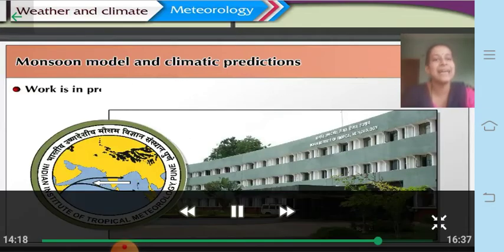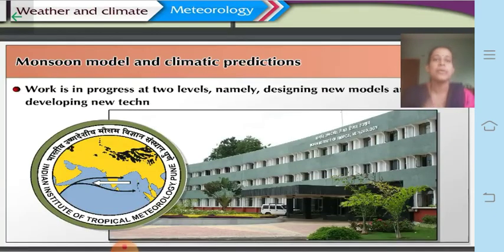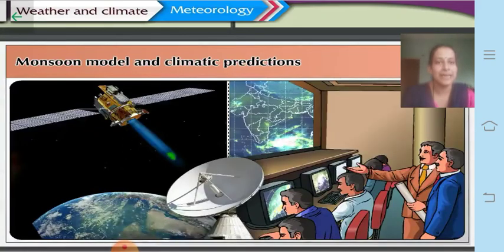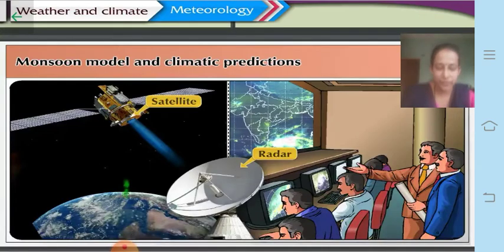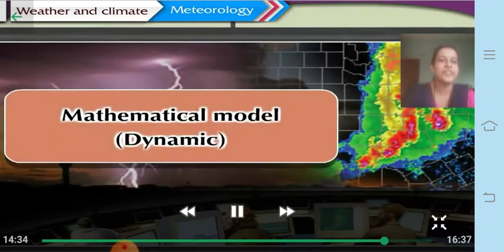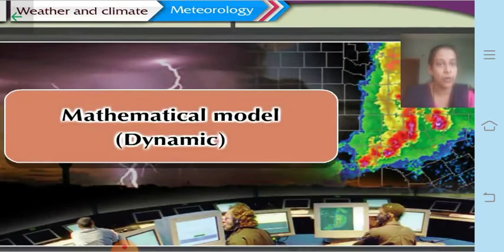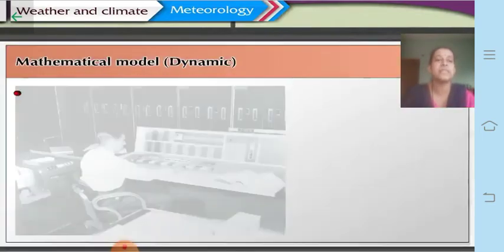Presently, new models are being developed at IITM — the Indian Institute of Tropical Meteorology. Work is in progress at two levels: designing new models and developing new technologies. These models use radar systems and satellites to find out about different climatic predictions. Let us now learn about the different monsoon models, the first of which is the mathematical model, also called the dynamic model.